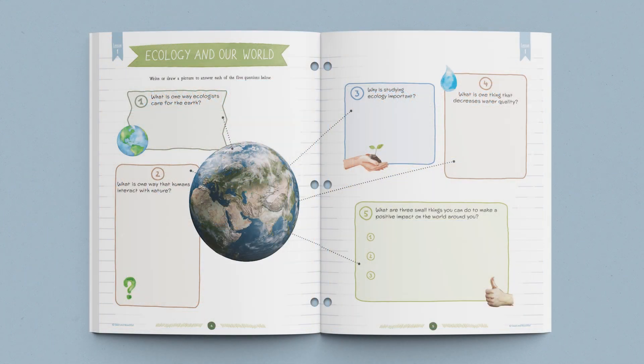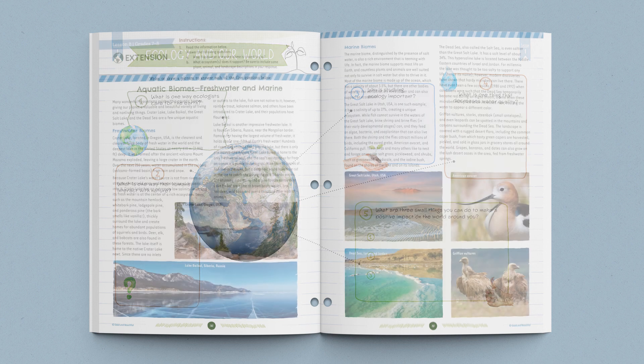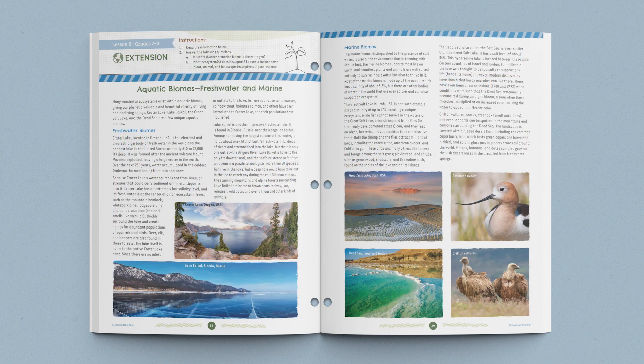The student journals include meaningful activities, engaging projects, and fun worksheets that help students explore the lessons. The grade seven and eight journals also include lesson extensions for each lesson, encouraging older children to dive deeper into the topics.